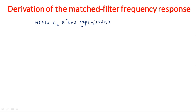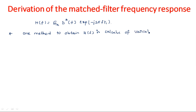In order to get the expression for H(f), there are two types of methods available. One method is calculus of variations, and another method is the Schwarz inequality theorem. Here, our matched filter frequency response H(f) is going to be derived using the Schwarz inequality theorem.